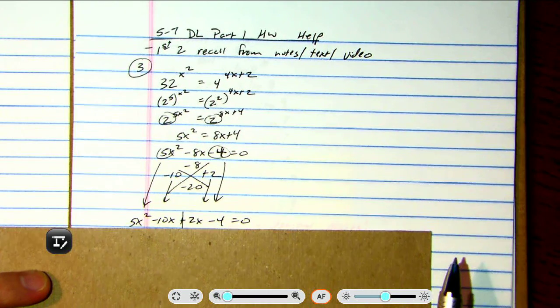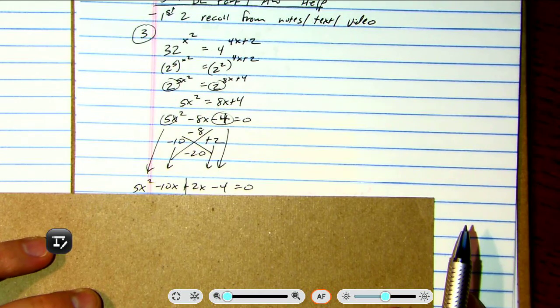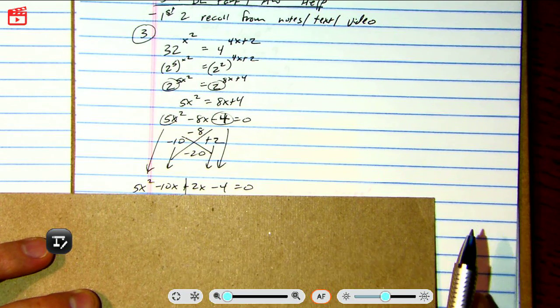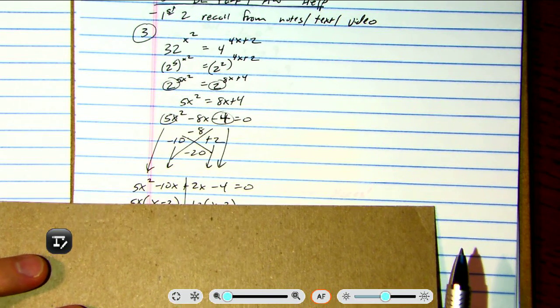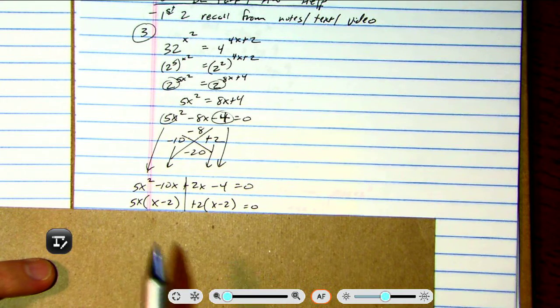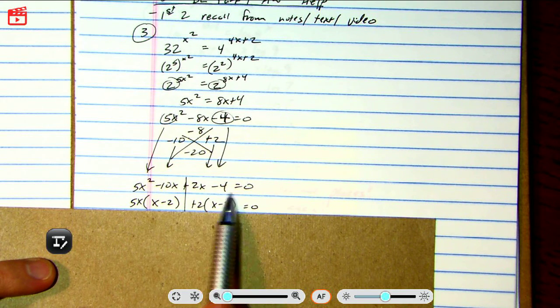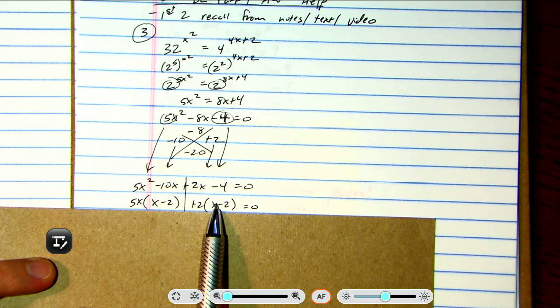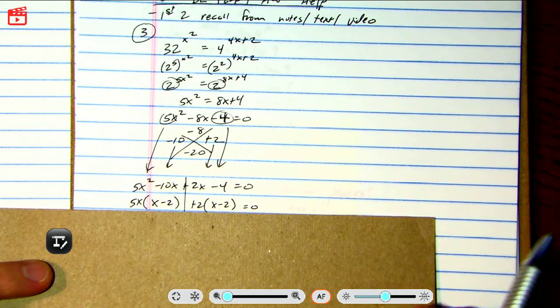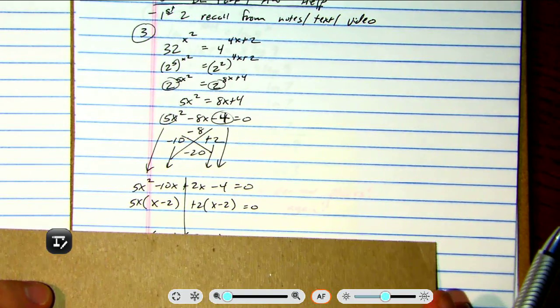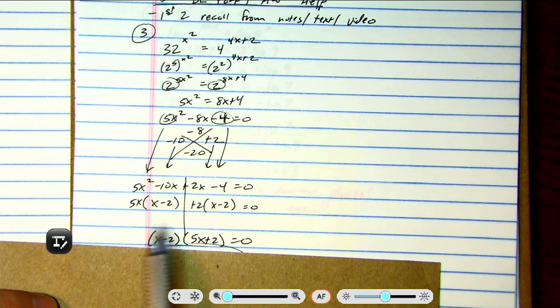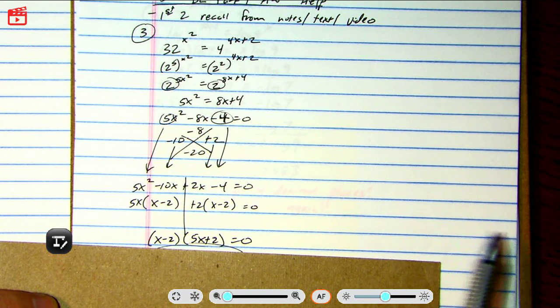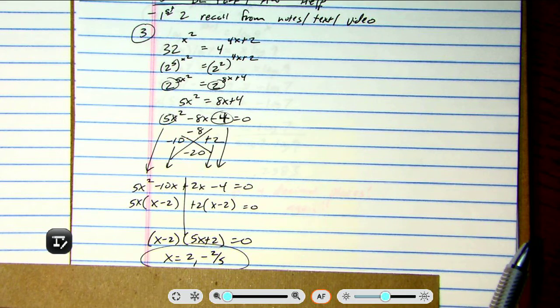Then we factor by grouping. Here's a good way to remember factor by grouping. So the GCF of the front is 5x and the GCF of the back is 2. Look what's left over in the parentheses: x minus 2. That's our new GCF. We factor out that x minus 2 and rewrite what's left over inside, and then use zero product property and those are the two answers.